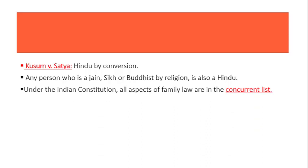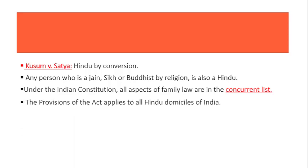Under the Indian Constitution, all aspects of family laws are in the concurrent list. Hamari Indian Constitution mein teen type ki list hoti hai: state list, center list, and concurrent list. Toh ye jo family law ka concept hai, yeh concurrent list mein aata hai, yaani ki state aur center dono ka control hota hai in family laws per, aur dono mil kar interrelated provisions bana sakte hain. The provisions of the act apply to all Hindu domiciles of India.